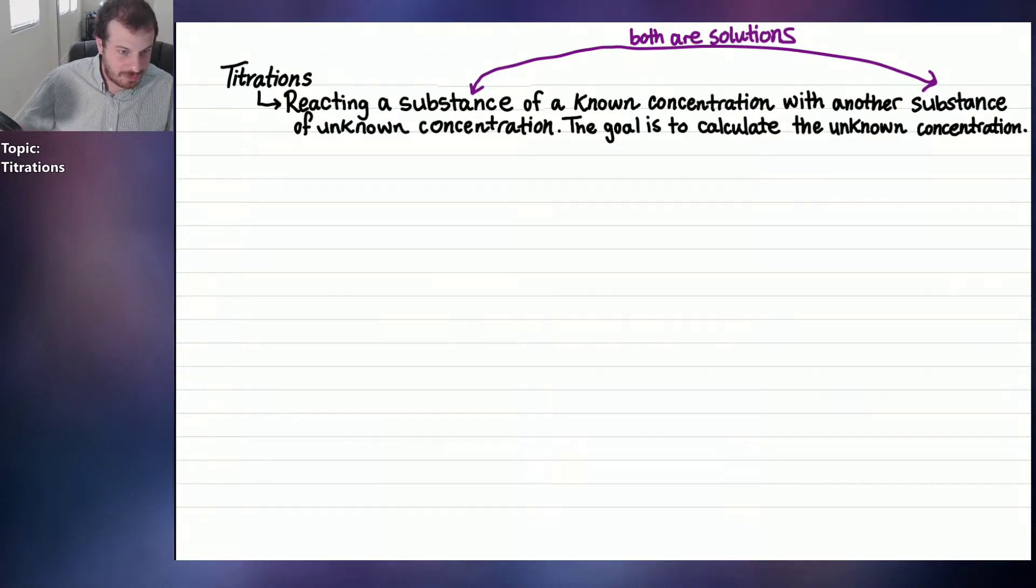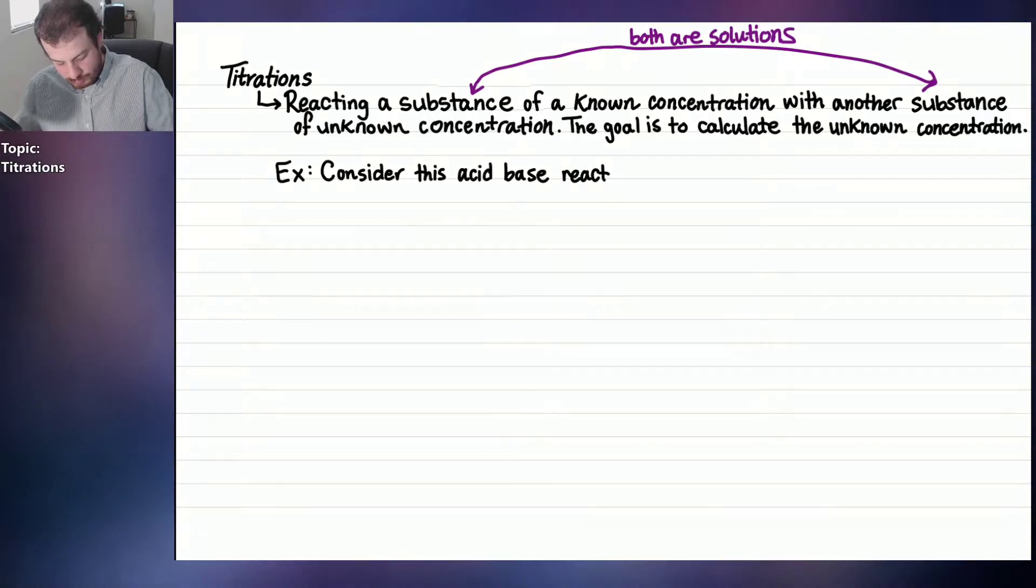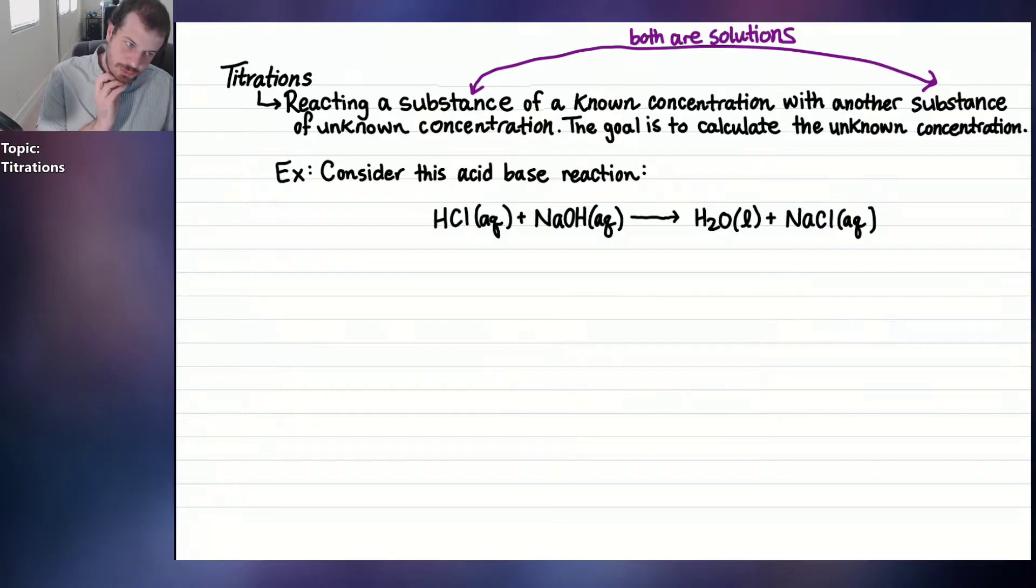So that's the definition of a titration. What does this look like in practice? In this class, we're only going to look at a specific type of titration, which is the acid-base titration. This is something you do in the Beyond Labs experiment 10. So consider this acid-base reaction. This is the most famous acid-base reaction. Hydrochloric acid plus sodium hydroxide produces H2O liquid plus NaCl aqueous.